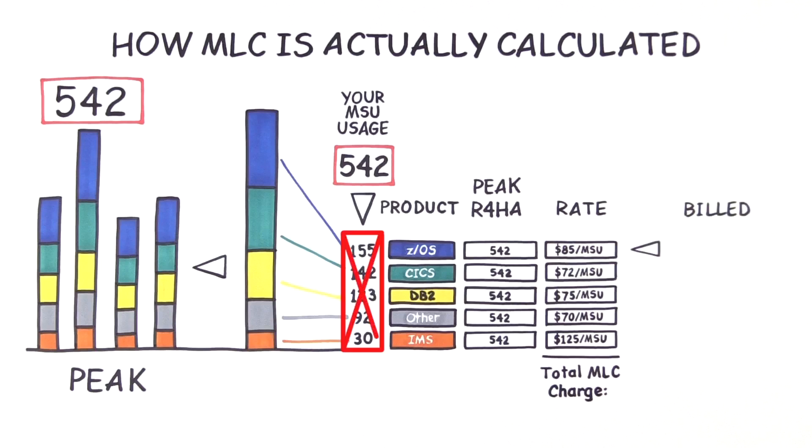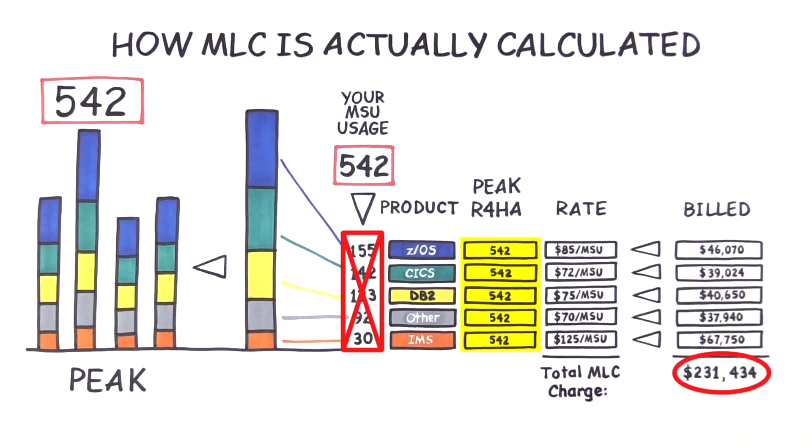Instead, you are charged the total peak usage of all workloads running on the LPAR, added together, and then multiplied by every product's cost. And that looks like this. Wow, that's a big difference.